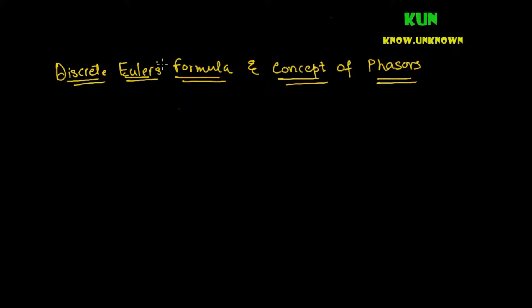Welcome to this video on discrete Euler's formula and the concept of phasors. Before we address why we see repetition in the frequency domain due to upsampling, we'll discuss Euler's formula, the concept of phasors, and try to decompose the formula — specifically, we'll decompose theta into omega and t and find some relationships.